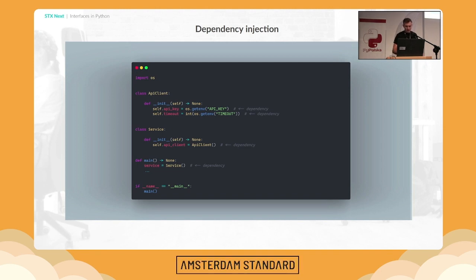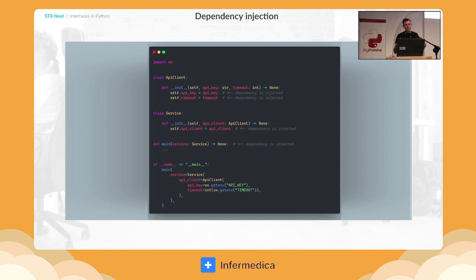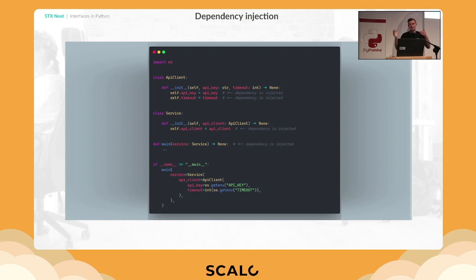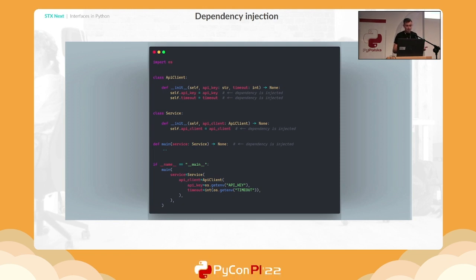How could we actually improve that code? Now the API client is decoupled from knowing where its parameters — API key and timeout — come from. It doesn't matter whether you get those values from a database, environment variables, or a config file. The dependency is just decoupled. The service receives an already-ready API client, we're not initializing anything, and main just receives the service as a parameter and runs it.